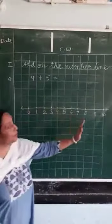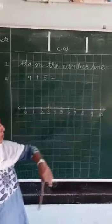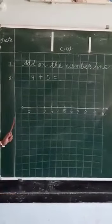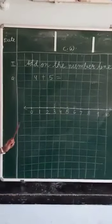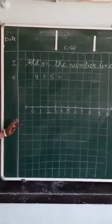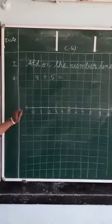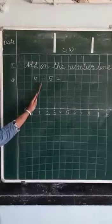That means you can write numbers after 10 also. So this is a number line with numbers written on it. And we have to add on this number line. And our numbers are 4 plus 5.